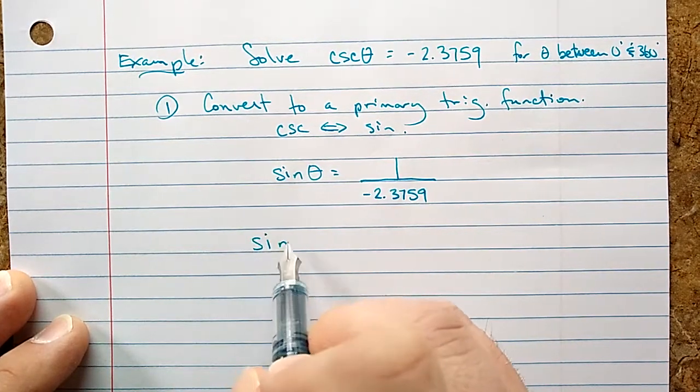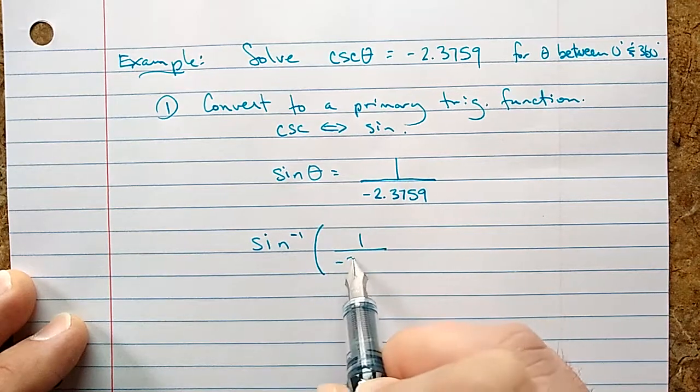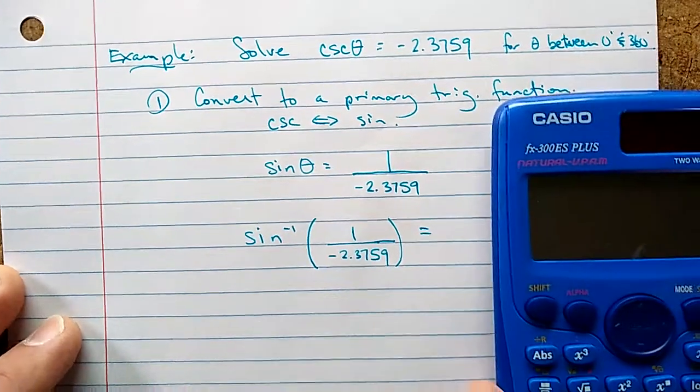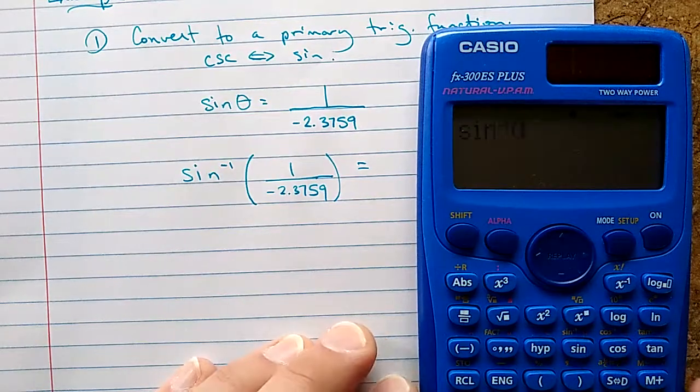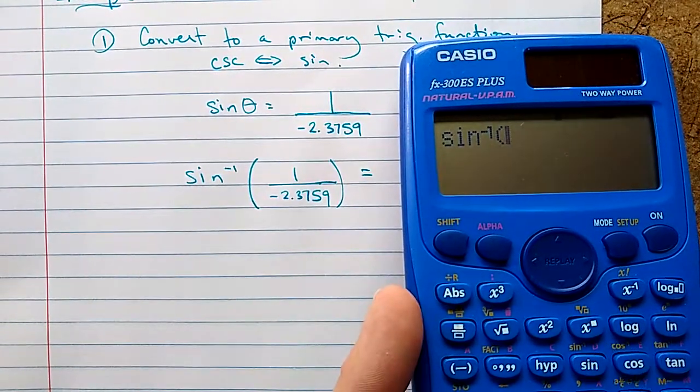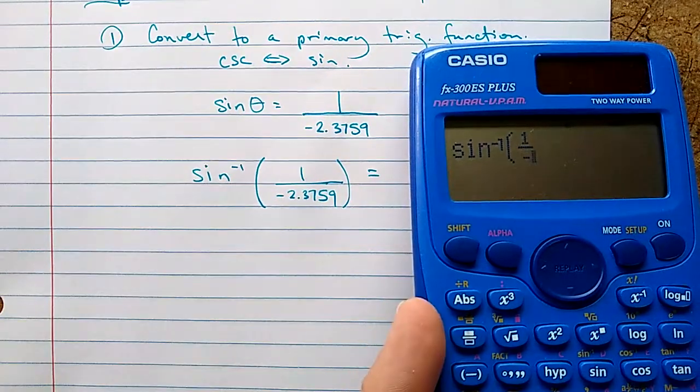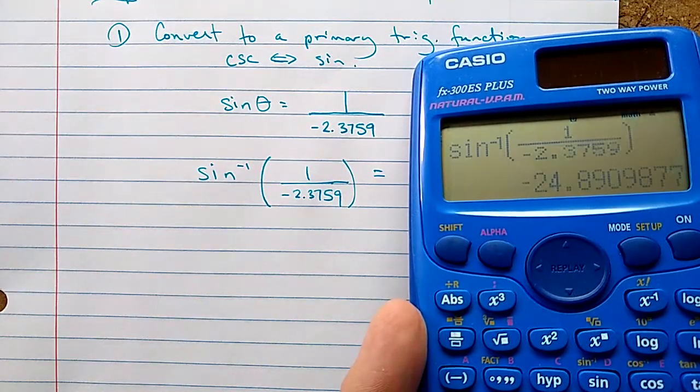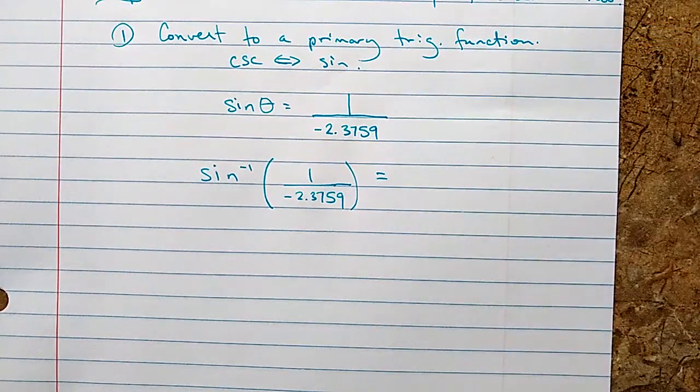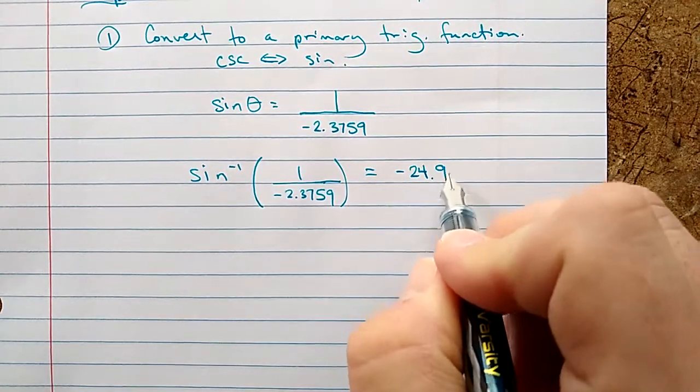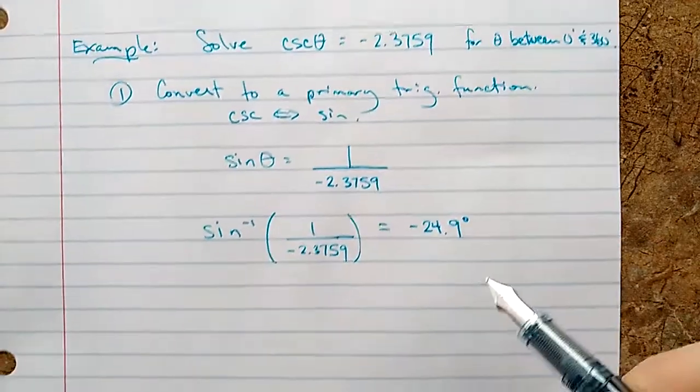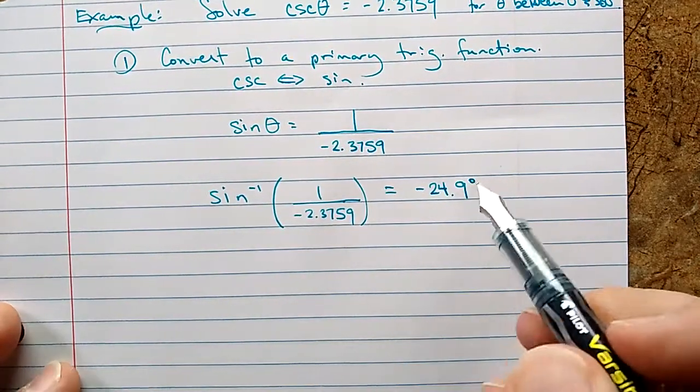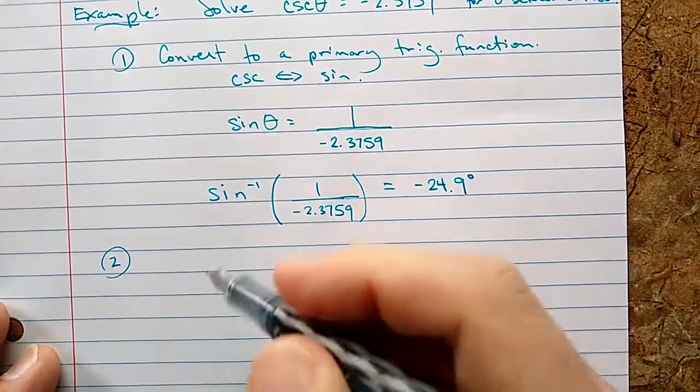Now we can use our strategy of taking the sine inverse of that number to give us an angle to work with. Sine inverse, in the brackets here you might like to use your fraction button, one over 2.359. And I get negative 24.9 degrees. You'll notice that's not between zero and 360, and this is why we're not writing theta equals something, because this number is a great number but it's not in the range we're looking for. So we from here have to interpret this, and we'll do that using our CAST rule.